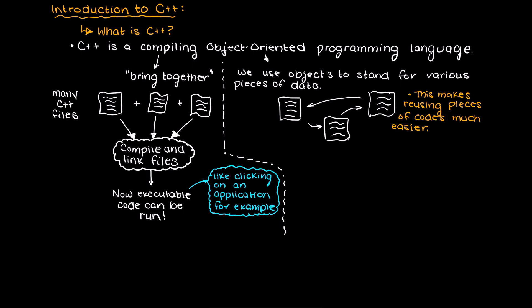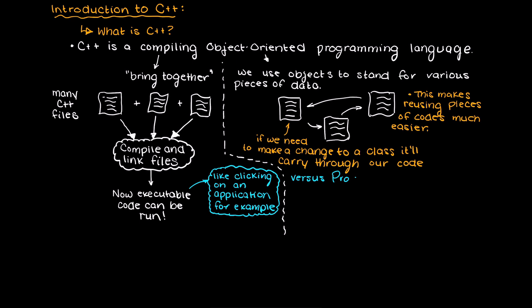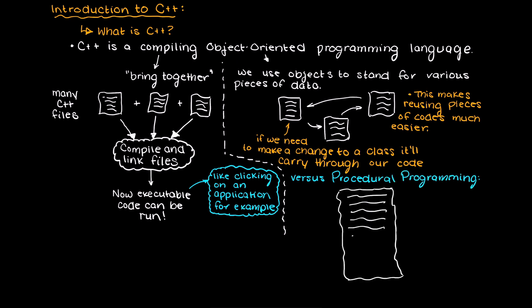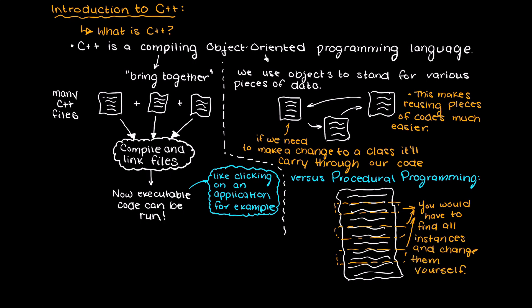This makes reusing and finding new uses for chunks of code much easier than in procedural programming languages. So if we have to make a change to a reused class, for example, we do not need to go back and update every single instance of that class in our code, and this can save us significant amounts of time. We will talk more about what exactly classes, objects, attributes, etc. are in the coming videos, so don't worry about that right now.